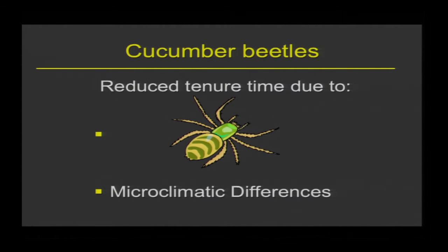What about cucumber beetles? What we kept seeing was that somewhere between 21 days after planting, we always got a reduction of cucumber beetles on squash plants in the system with sunhemp. We think it was reduced tenure time — the cucumber beetles had no problem finding the squash plants and were always landing at similar numbers, but then somewhere around that third week they started leaving. One possible reason was the spiders: as spiders started showing up in heavier numbers, the beetles probably started leaving. Also from the literature, when you interplant squash with another plant, it changes the microclimatic conditions just a little bit — unnoticeable to us, but cucumber beetles notice it and tend not to like those conditions.